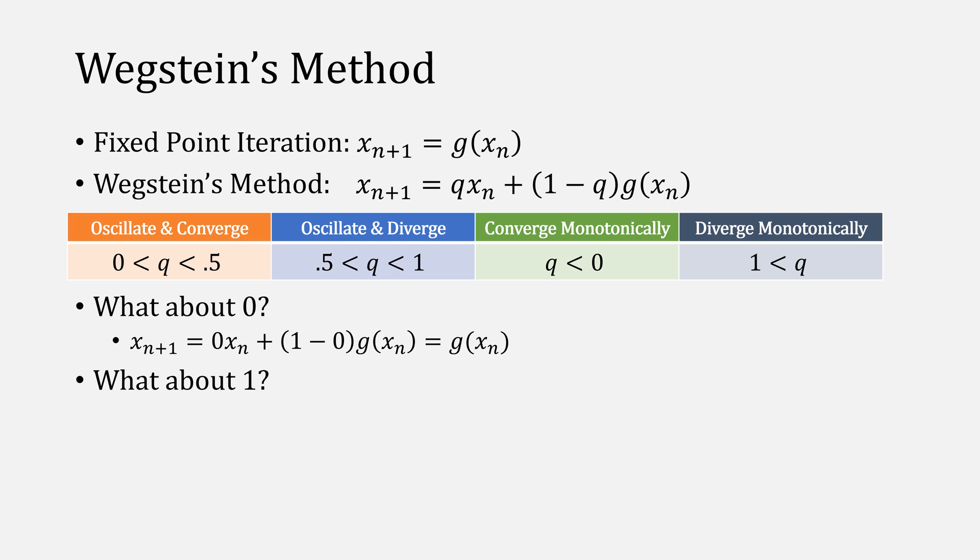Then what about 1? When that's the case, then we'll eliminate g of x. If we chose a value of 0.5, then we're neither leaning into x sub n or g of x, so it's not really helping anything.